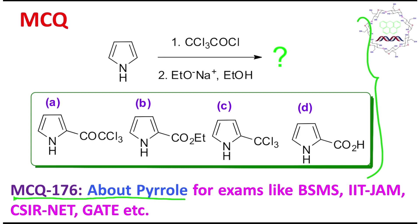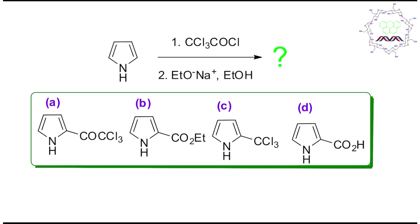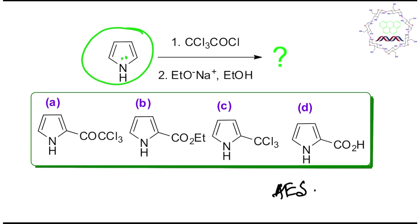I believe you have tried by yourself, so it's my turn to give you the right answer. Now if you look at the reaction condition and this reagent pyrrole, the first step is aromatic electrophilic substitution, or AES. In this case, pyrrole is actually an aromatic heterocyclic compound — a five-membered aromatic heterocyclic compound — and it is a pi-excess nucleus.